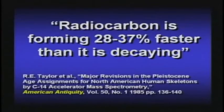Did you know they've discovered the Earth has still not reached equilibrium? Radiocarbon is still forming 30 to 40 percent faster than it's decaying. If radiocarbon is still forming faster than it's decaying, that means the Earth is less than 30,000 years old. And you can't carbon date anything because you'd have to already know when it lived to figure out how much carbon-14 it was breathing at that time. It doesn't work.